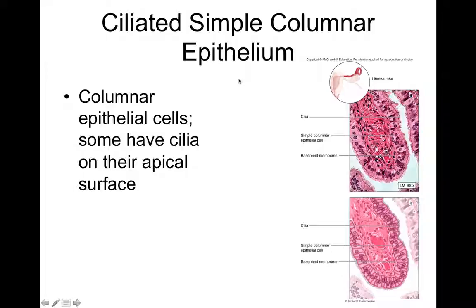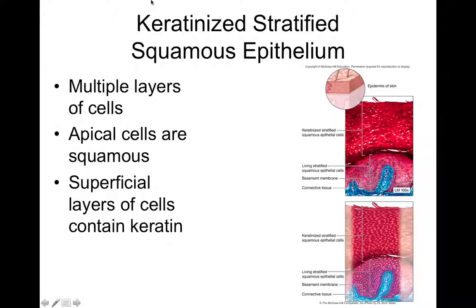Regarding keratinized versus non-keratinized stratified squamous epithelium: keratin is a type of protein that's very tough and waterproof. Nails and hair are made of keratin — you can twist hair into a rope and it can be quite strong. Skin cells are packed full of keratin, giving skin additional toughness. The skin's epithelium is called keratinized stratified squamous epithelium.